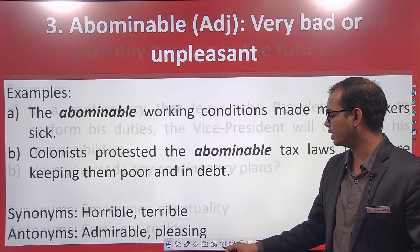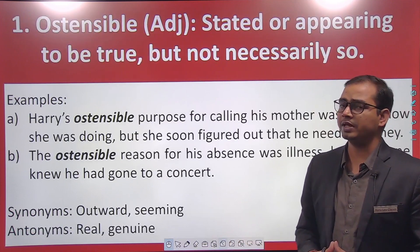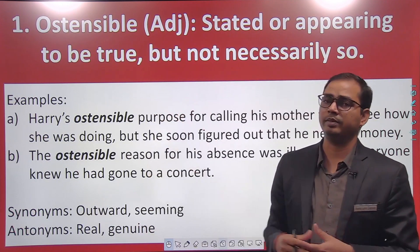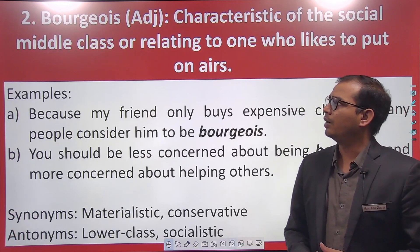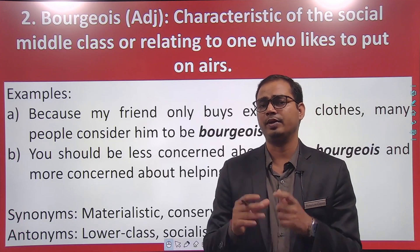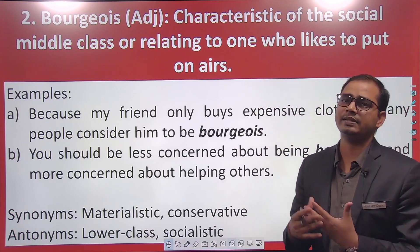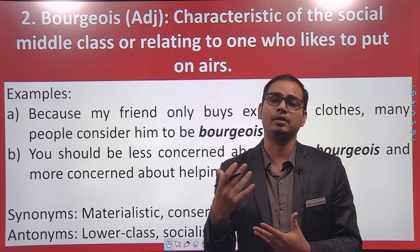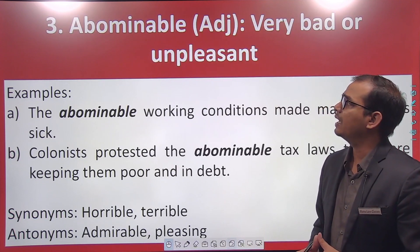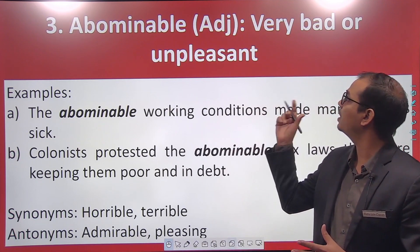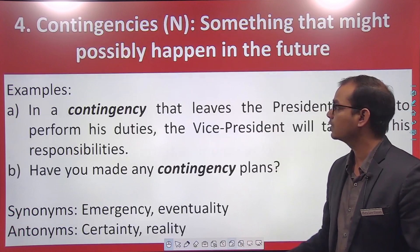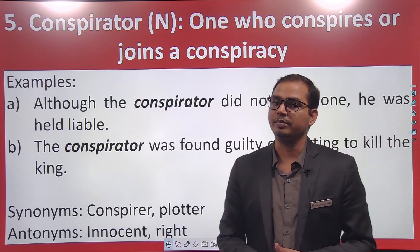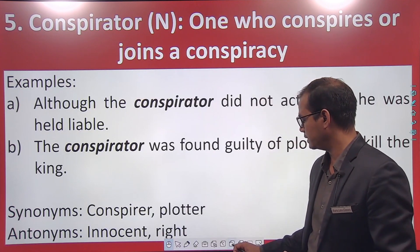Let us recall all the words discussed in today's video. The first one is 'ostensible' — always remember it is the opposite of genuine. Genuine means real; ostensible means something which appears real but is not — dikhavati. Bourgeois means a person who wants to show off through their wearing style, wanting to show they are rich and better than others. Abominable means something very bad. Contingency means emergency. Conspirator means someone who conspires — jo sadiyantra kari hai.